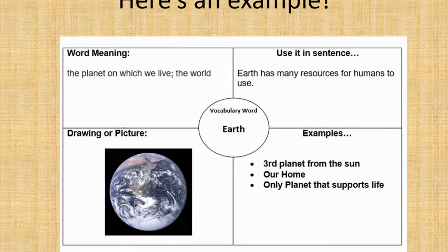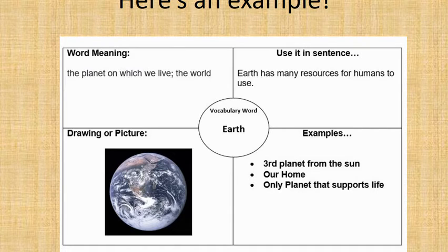Here's an example of what I did. I made a Frayer model for the word 'earth.' The meaning: Earth is the planet on which we live — the world. I used it in a sentence: 'Earth has many resources for humans to use.' I have a drawing of Earth, and I gave examples: other names for Earth, third planet from the sun, home, and only planet that supports life.